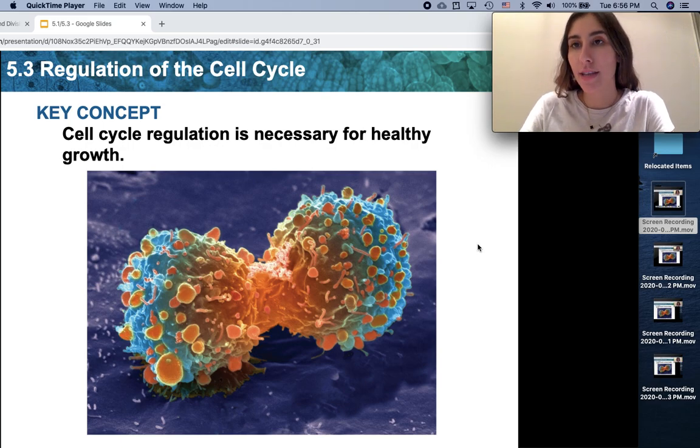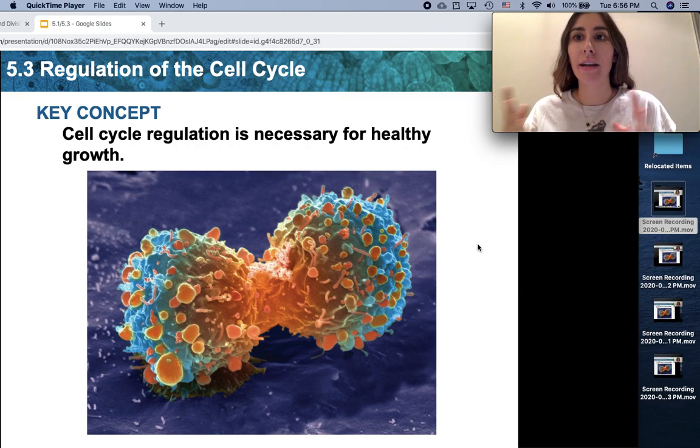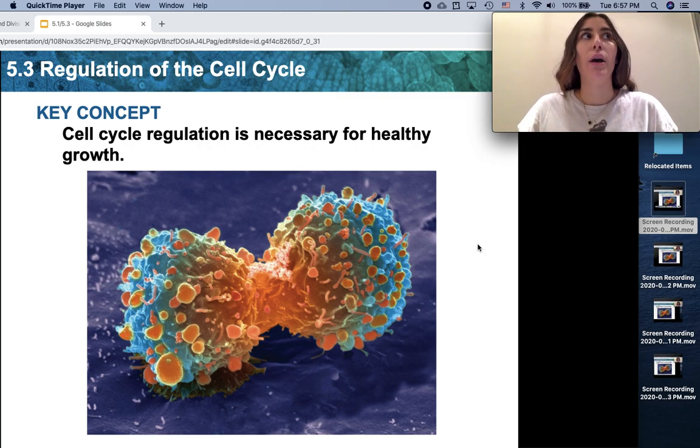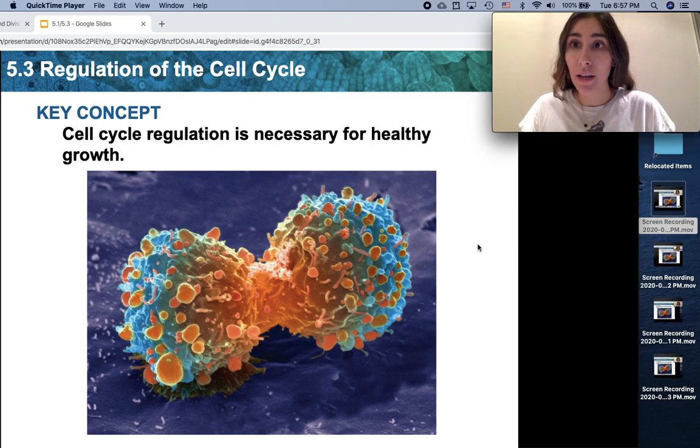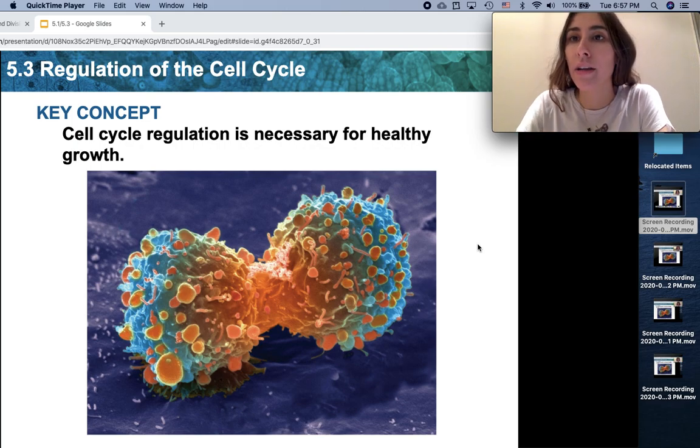We're going to be talking about how the cell cycle is regulated. The cell cycle is a series of events that the cell goes through as it first prepares to divide and then actually divides. This happens for a variety of reasons. As an organism grows and develops, they need more cells, and the cells in your body have to divide in order to increase in number.